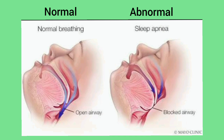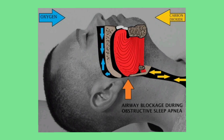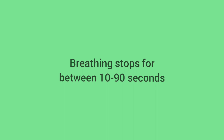Obstructive sleep apnea happens when the throat is partially or completely blocked at times while sleeping, causing a person to stop breathing. Breathing stops might happen for between 10 to 90 seconds, and then the person wakes up briefly, which restarts breathing.